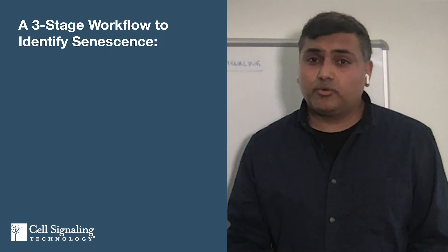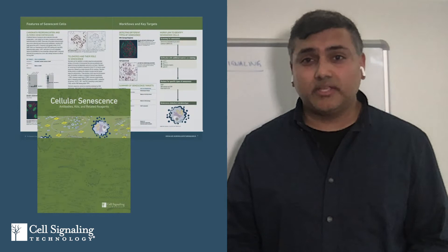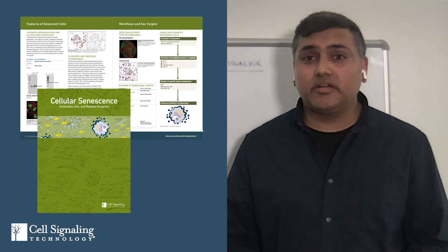A three-stage workflow is recommended: starting with screening, followed by co-staining for verification, and then moving on to analysis of biomarkers for specific types of senescence. For a more comprehensive guide, you can download a PDF of our senescence e-book—check the link section below this video. Let us know in the comments what disease areas or research topics you're studying, and don't forget to like and subscribe.